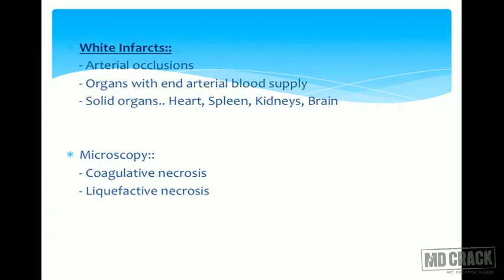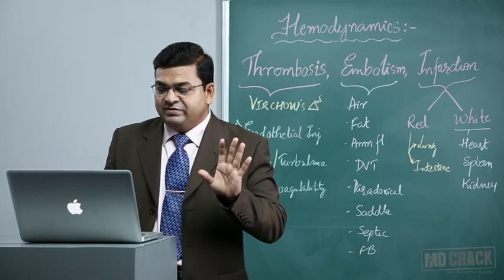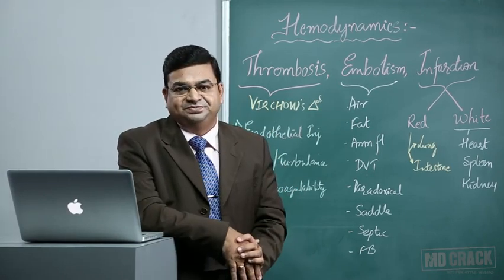Organs with a single arterial end blood supply show white infarcts. The heart has only coronary arteries, the spleen only the splenic artery, and the kidneys only the renal artery — occlusion in any of these results in white infarcts. Heart, spleen, kidney, and brain all show white infarcts. Microscopically, heart, spleen, and kidney show coagulative necrosis, while the brain shows liquefactive necrosis.